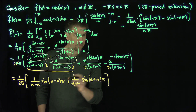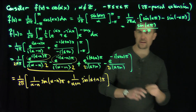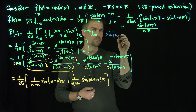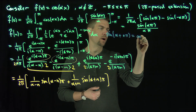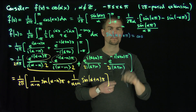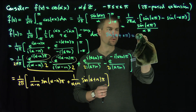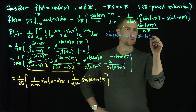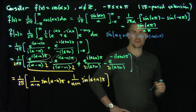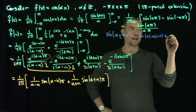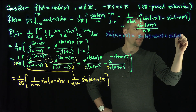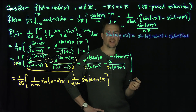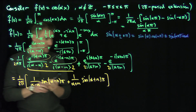Now, what is sin((α±n)π)? Using the angle addition formula: sin(απ)cos(nπ) ± cos(απ)sin(nπ). But sin(nπ) equals zero, so those terms vanish. We're left with sin(απ)cos(nπ) = (-1)^n sin(απ). So these expressions simplify nicely.